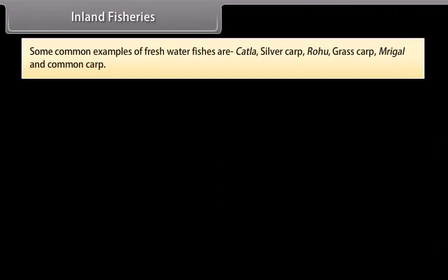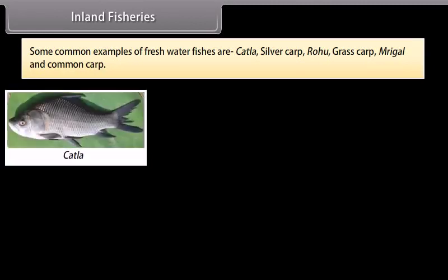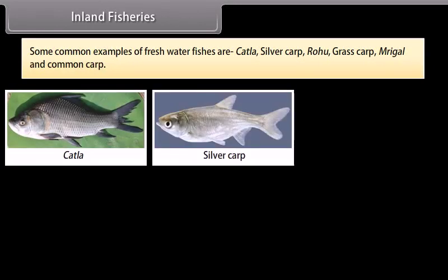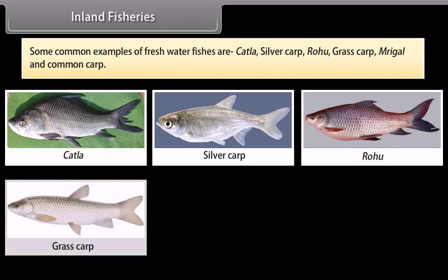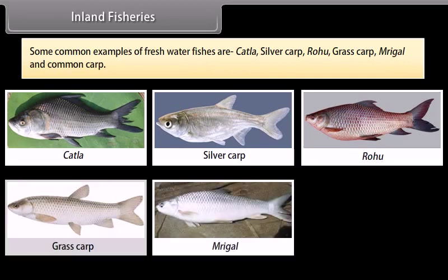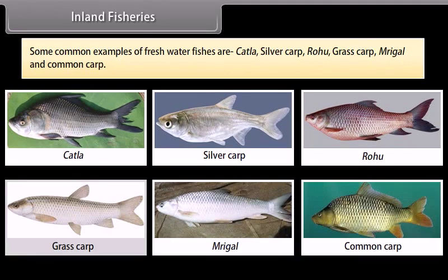Some common examples of freshwater fishes are Katla, silver carp, rohu, grass carp, mrigal and common carp.